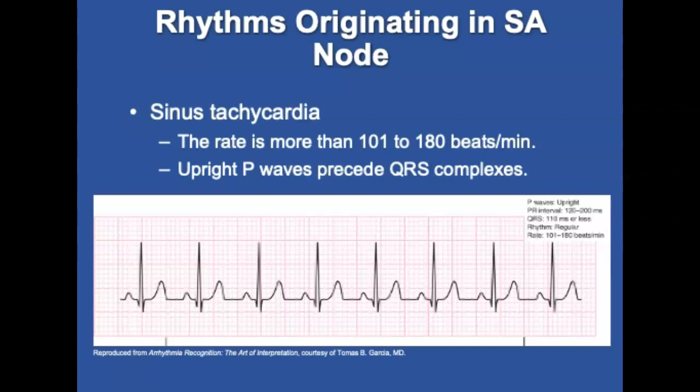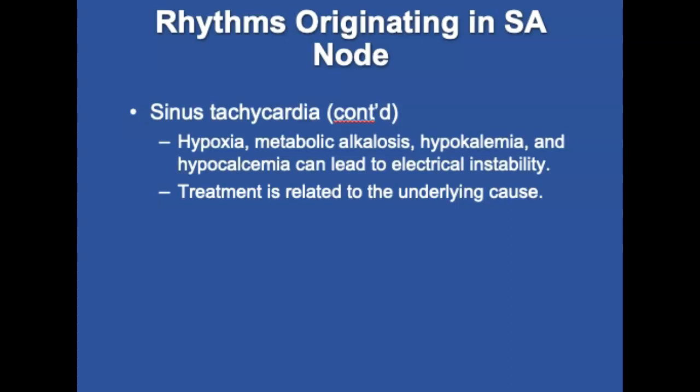Sinus tachycardia is a rhythm that also originates in the SA node, but the rate is between 101 and 180 beats per minute. It's a regular rhythm; an upright P wave precedes every QRS complex. The PRI interval is 0.12 to 0.20 seconds and QRS is 0.11 seconds or less. Sinus tachycardia may result from pain, fever, hypoxia, hypovolemia, exercise, sympathetic nervous system stimulation, certain drugs, caffeine, nicotine, alcohol, metabolic alkalosis, hypokalemia, or hypocalcemia. These can lead to electrical instability, prompting firing of cells that normally do not generate impulses. Treatment is related to the underlying cause.